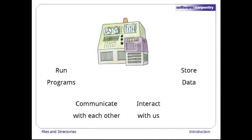As we said in the last episode, a computer has four main jobs: run programs, store data, communicate with other computers, and interact with us. One way the computer can interact with us is through a command shell. We type commands, the shell tells the computer to run programs on our behalf, and then the shell shows us the output from those programs.